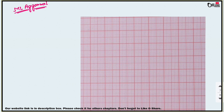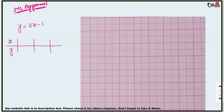Question number 3: draw the graphs of the following linear equations. First: y = 2x - 1. Make a table of x and y values. The value of y depends on x. Choose values so that results are whole numbers. If x = 0, then y = 2(0) - 1 = -1.